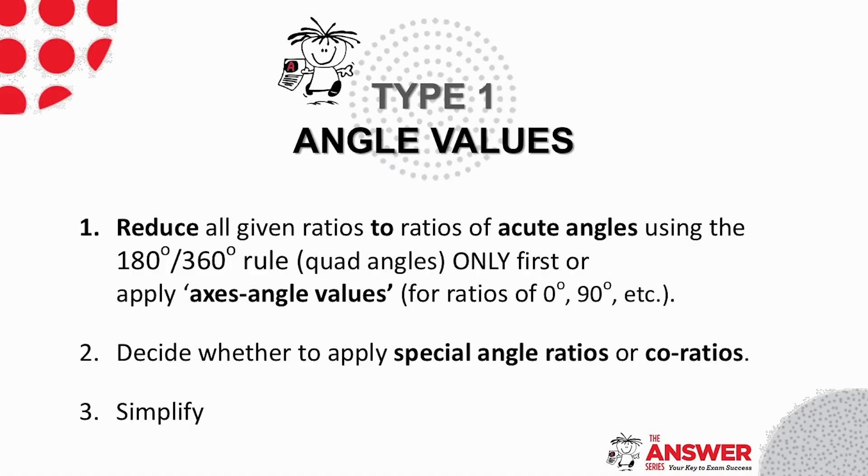Let's start with what I've called type 1 which is looking at reduction of ratios of actual angle values. There are three steps in this process.